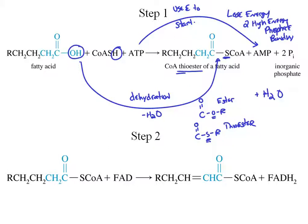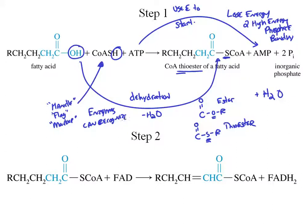So we make a thioester of a fatty acid. This CoASH molecule is actually a very big, complicated molecule — we'll always just write CoASH. I call it a handle or a flag — it's someplace for enzymes to interact with. Enzymes can recognize that CoASH. By attaching CoASH to this fatty acid molecule, we're signaling the next enzyme in the process to latch onto that CoASH and do the next step in the chemical reaction.